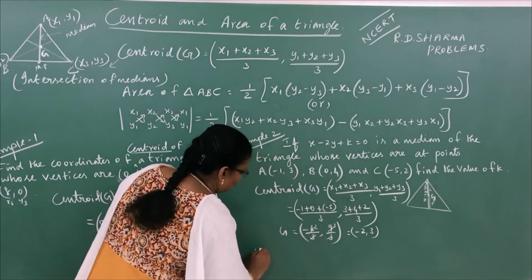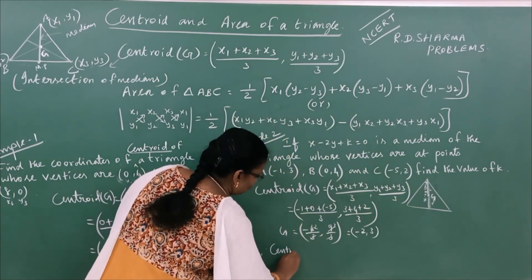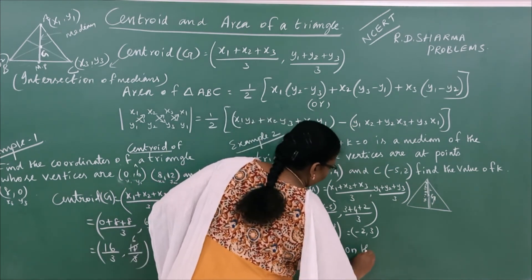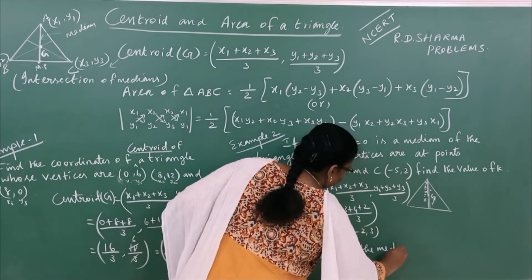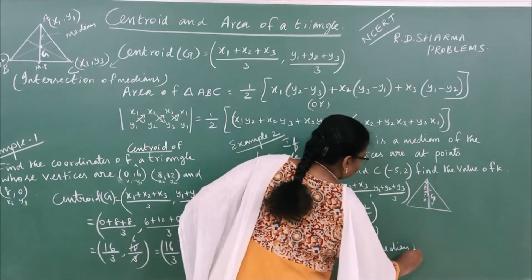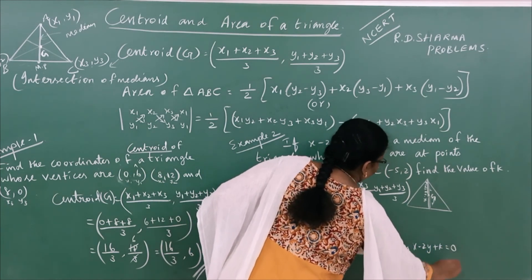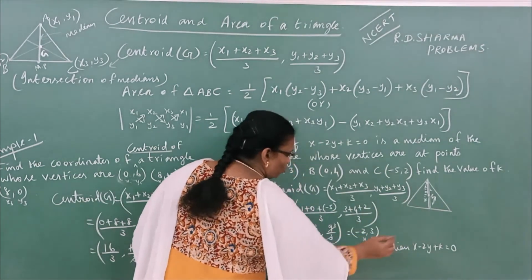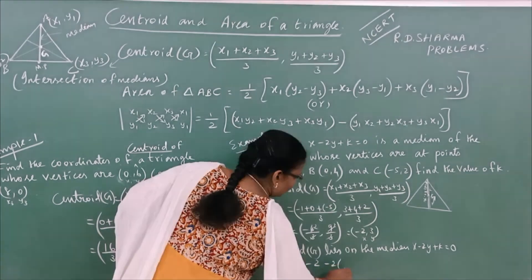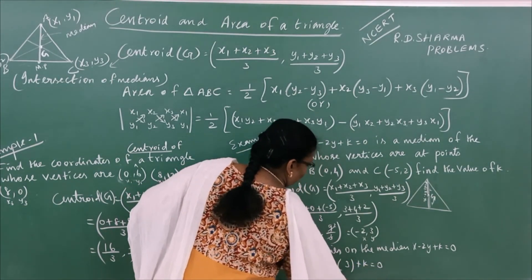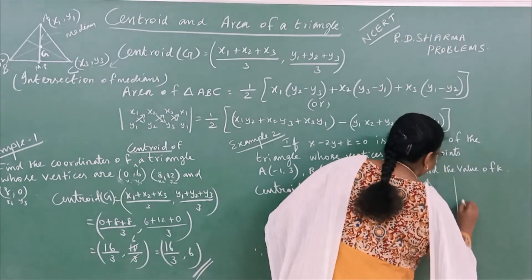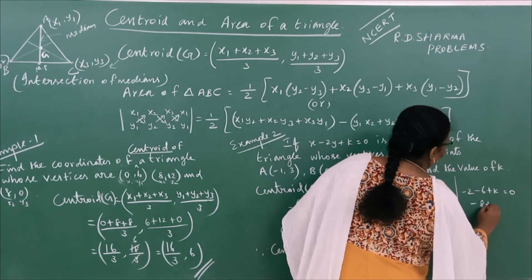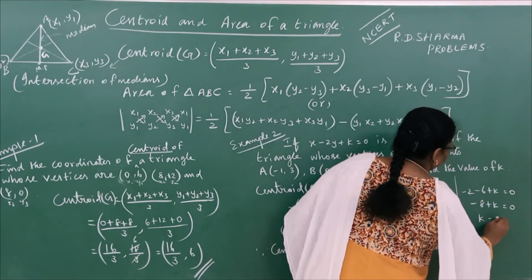This is the centroid. Since the centroid G lies on the median, median equation is x minus 2y plus k equals 0. We substitute x and y: x minus 2 times y — minus 2 into 3 — plus k equals 0. That gives minus 2 minus 6 plus k equals 0, minus 8 plus k equals 0. k equals 8.